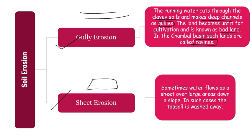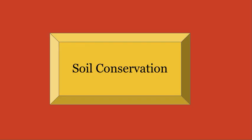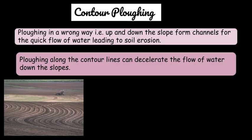Since soil erosion is a problem, we need solutions — that is soil conservation. The first method is contour plowing or contouring. Incorrect plowing up and down the slope forms channels for quick flow of water, leading to soil erosion. So plowing along the contour lines can decelerate water flow and help conserve soil.